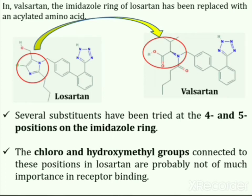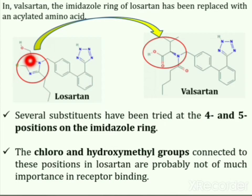Several substituents have been tried at the 4th and 5th positions on the imidazole ring. The chloro- and hydroxymethyl groups connected to these positions in losartan are probably not of much importance in receptor binding, because the other angiotensin receptor blockers do not contain these functional groups and have comparable or better affinities than losartan.